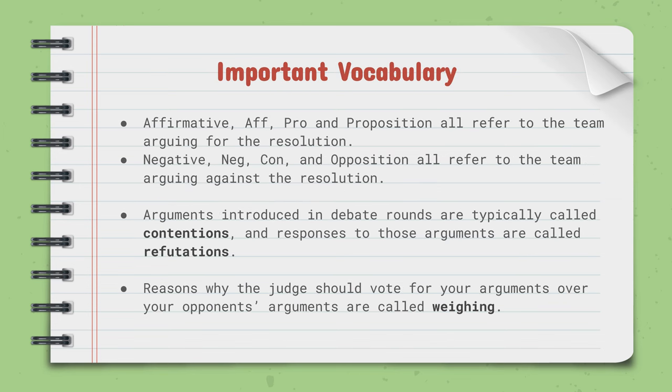Debate is known for having a ton of jargon and random words, which might seem intimidating, but you'll learn them eventually. Here are some basic vocabulary terms. For the affirmative team — the person arguing for the resolution — we call them affirmative, aff, or pro. For the other side, it's negative, neg, con, or opposition. Opposition is more of a parliamentary term; in PF it's generally negative, neg, or con — the person arguing against the resolution.